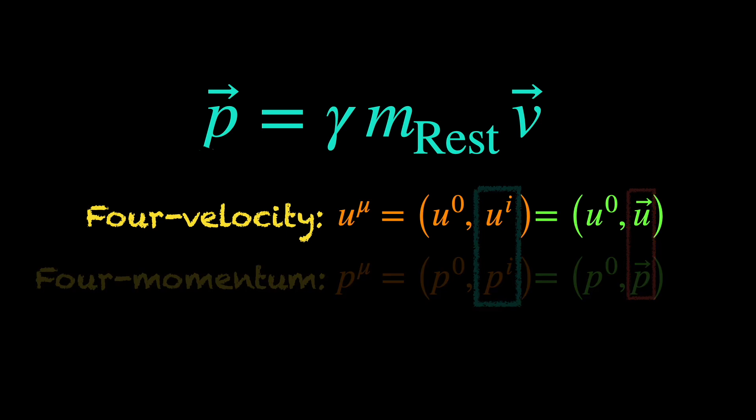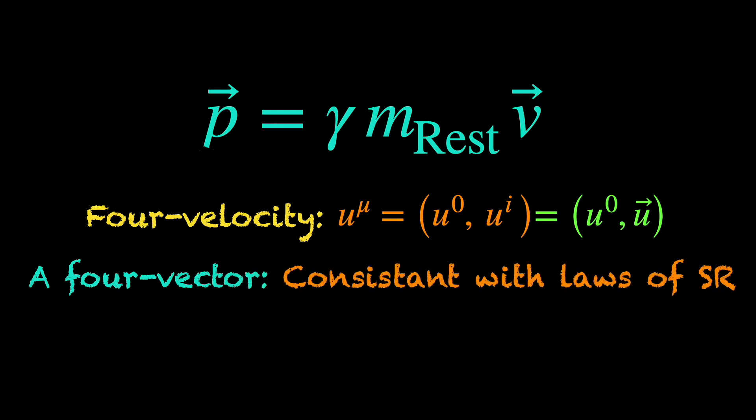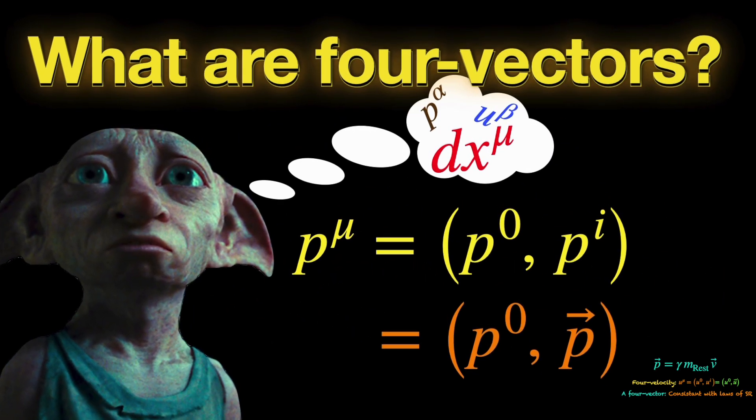Let's take the 4-velocity first. It is a 4-vector, meaning under a Lorentz transformation, its change of components are consistent with the laws of special relativity. For details, check out my video on 4-vectors from the link in the description.